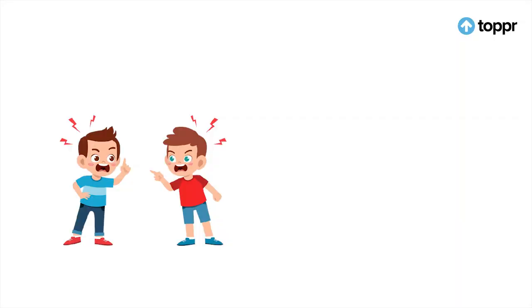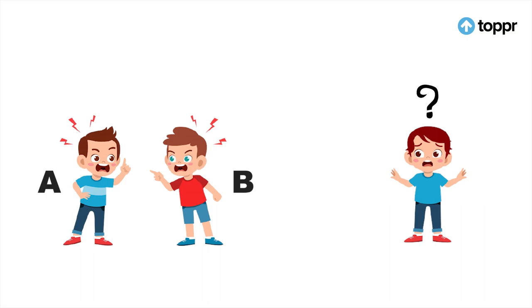Let's understand this with an example. Aapke do doston ki ladai ke liye aapko accuse kiya gaya hai. For the sake of simplicity, let's call them A and B. Aap is baat se anjaan hain ki wo kis baare mein baat kar raha hai. Aapke dimag mein khayal aata hai ki aap time machine banayenge aur usko past mein jaa kar thik karenge.